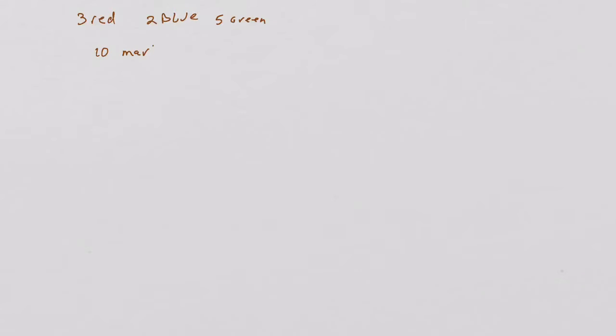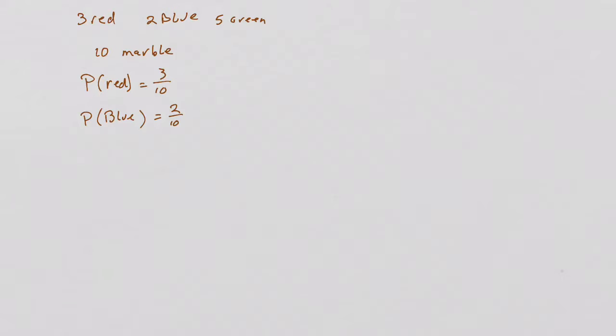Well, the first thing I look at is: I have three red marbles, two blue marbles, and five green marbles, for a total of ten marbles. So the probability of getting a red marble on the first draw is three out of ten. The probability of getting a blue marble is two out of ten, and the probability of getting a green is five out of ten. I'm not going to reduce these because I want to keep the same denominator — it makes life much easier.